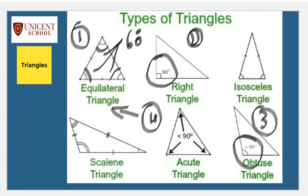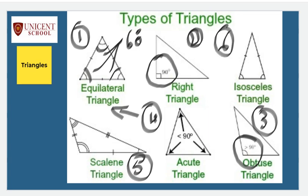Based on the sides, we have a scalene triangle - a triangle in which no two sides measure the same, and no two angles measure the same, so all sides and angles measure differently. We also have an isosceles triangle - a triangle in which two sides measure the same, and the angles opposite to those equal sides also measure the same.